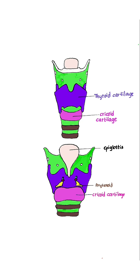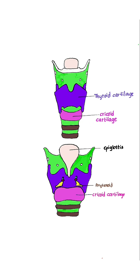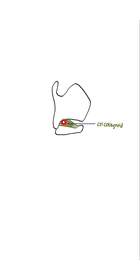Intrinsic muscles include — just remember this diagram. You are able to see the thyroid cartilage and cricoid cartilage. From the cricoid cartilage to the thyroid cartilage, there is the cricothyroid muscle.